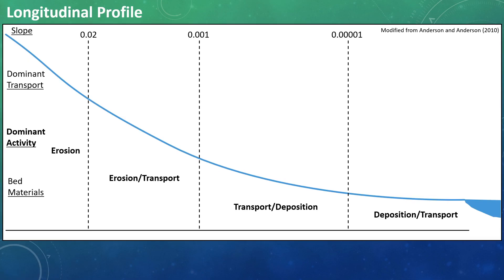This transitions into our understanding of the dominant activity in each of these reaches. In the steeper headwater regions, erosion is the dominant form of activity within the stream. Abrasion of the bed, saltating grains, results in a primarily erosive system.